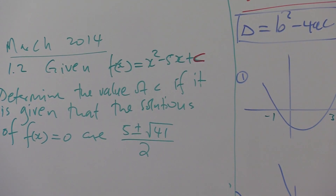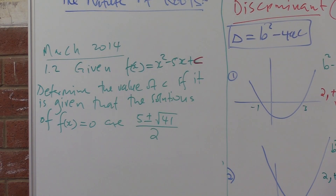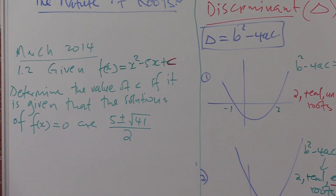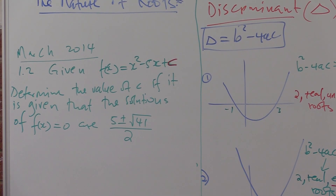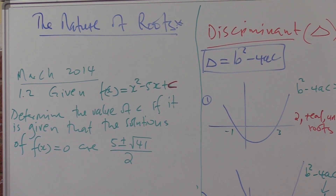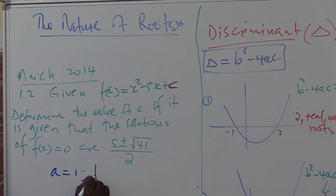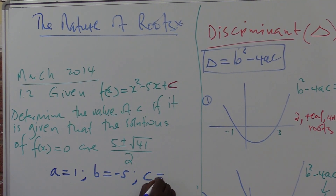We want the value of c. From the equation f(x) equals x squared minus 5x plus c, we know that a equals 1, b equals minus 5, and c is what we're looking for. The discriminant b squared minus 4ac is given as 41. So we set up: minus 5 squared minus 4 times 1 times c equals 41.